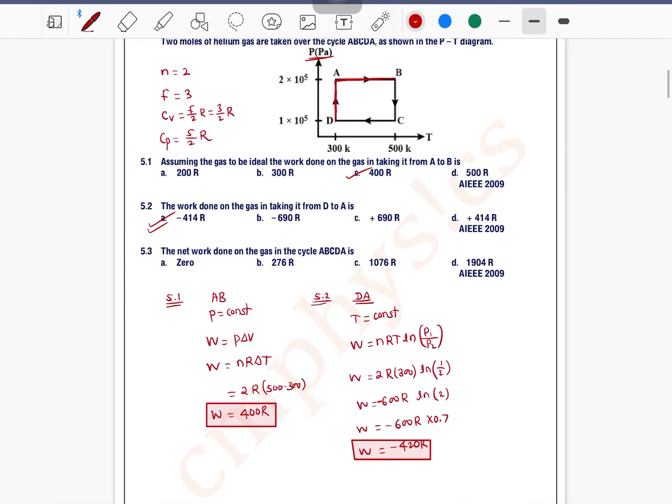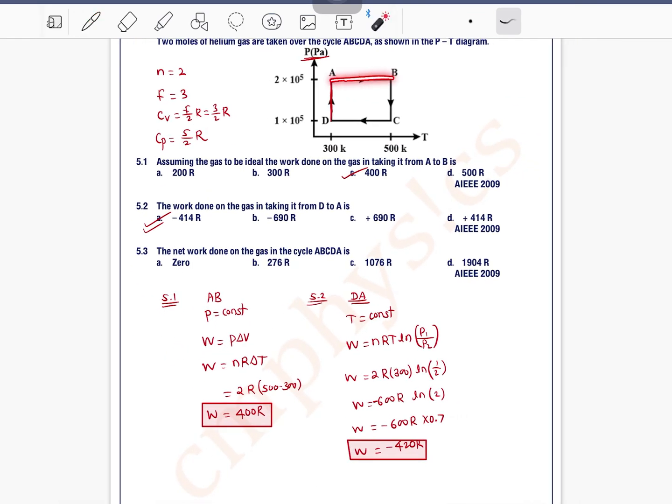Next question is the net work done on the gas in the cycle ABCDA. See, we have solved for AB process and DA process. Now we must solve for BC as well as CD process and add all the work done to get the answer.